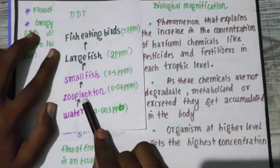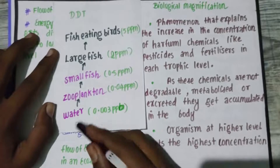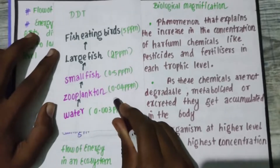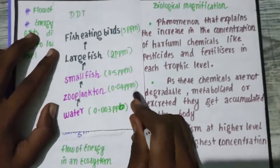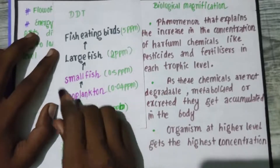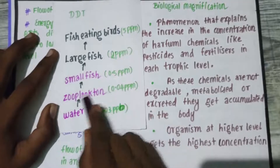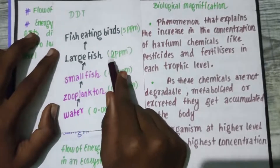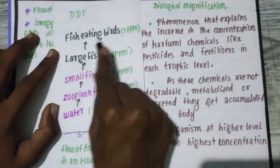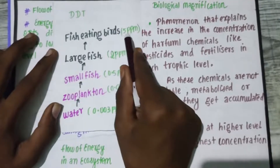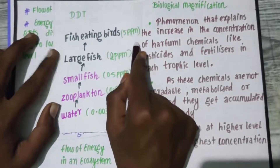Next, if you look at the water, there is zooplankton — a microscopic organism. The concentration in zooplankton is 0.04 parts per million. In small fish, it is 0.5 parts per million. In large fish, it is 2 parts per million. In fish-eating birds, it is 5 parts per million.